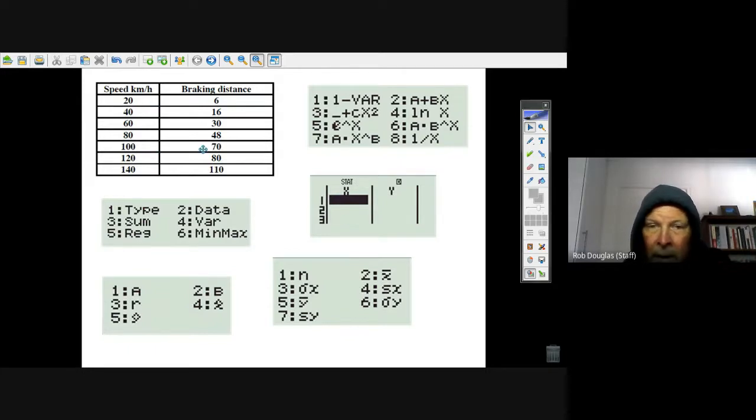Then you go shift stat and up will come this menu. Now there's two things you could do: you could go right to the regression line, or you could do the mean or standard deviation of any part of this. If they asked about the mean braking distance or standard deviation, it's right in here.